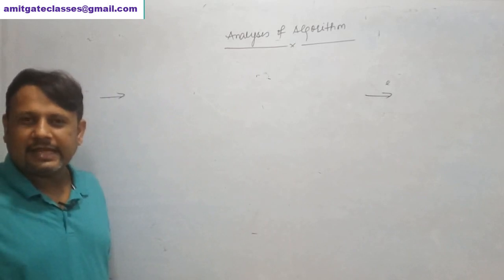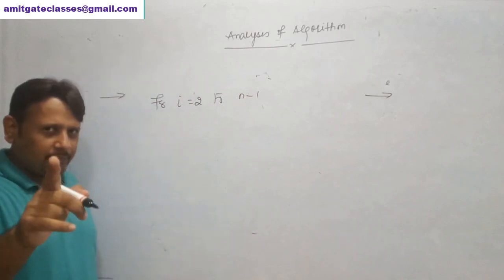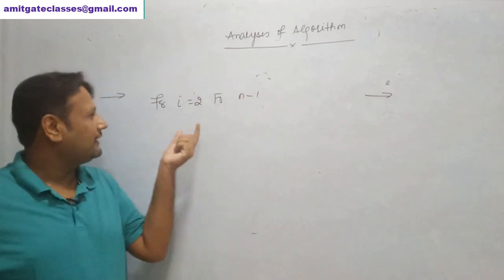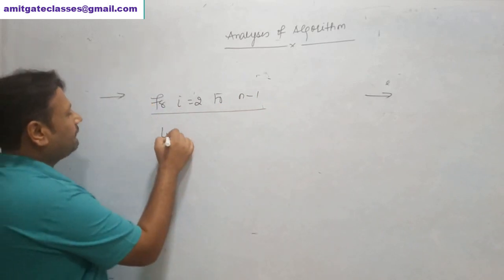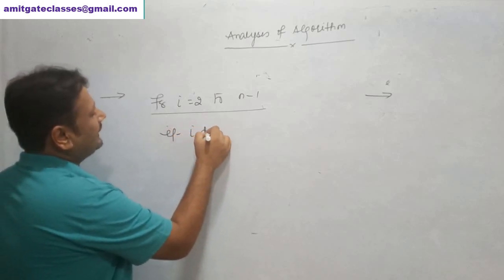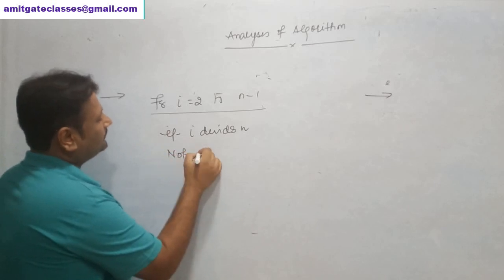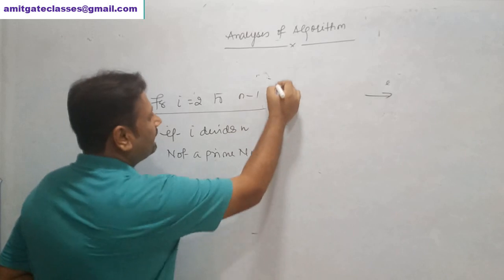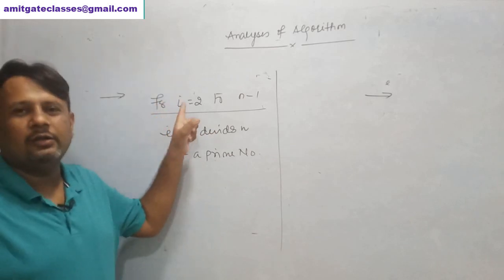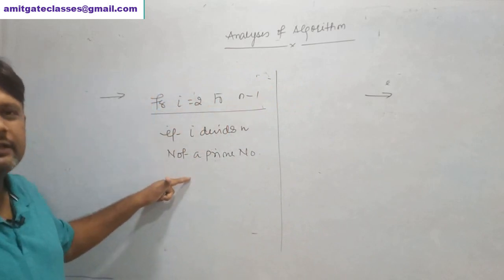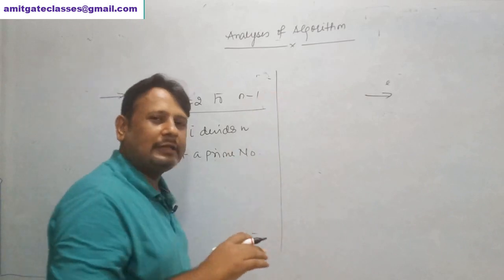My first student says: simply take a for loop — for i equals 2 to n minus 1. Since every prime number is divisible only by one and itself, we are not dividing by one or itself. So loop from i equals 2 to n: if i divides n, then it is not a prime number. This is a valid solution.